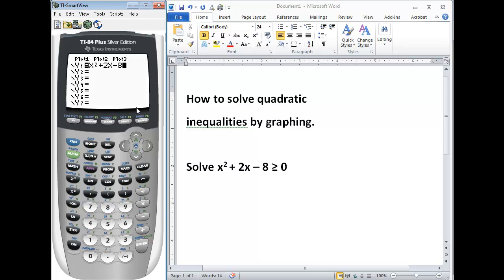So we use the graph button, and what this will do is show us our graph. Our x-intercepts are where our graph crosses or touches the x-axis. Here we have a solution at -4, and here we have a solution at positive 2.